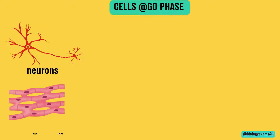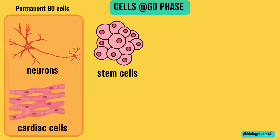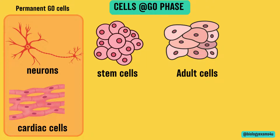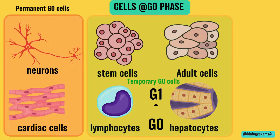Now let us see some examples of cells in G0. Terminally differentiated cells such as neurons and cardiac muscle cells remain in G0 permanently — once differentiated, they remain in G0 state permanently. Stem cells and some adult cells reversibly enter G0 phase due to absence of growth factors, contact inhibition, or lack of nutrients. Lymphocytes and hepatocytes can enter G0 temporarily and re-enter the cell cycle upon appropriate stimulation.